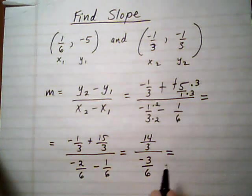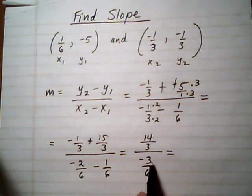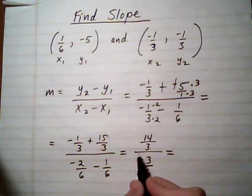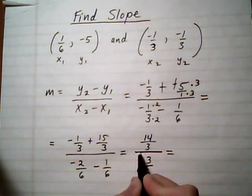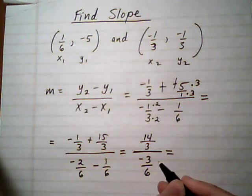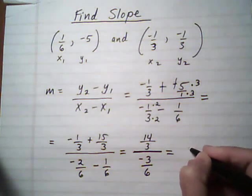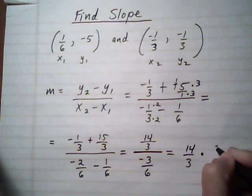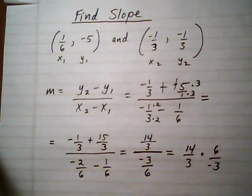So we're getting there. We made one fraction over one fraction, which is where we want it to be. Because now we can say, and think of this bar right here, this big fraction bar, as a division. If we have 14 over 3 divided by minus 3 over 6, that's exactly the same as 14 over 3 times the reciprocal of the bottom. So we're turning it into a multiplication problem.